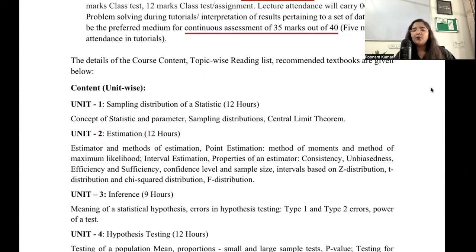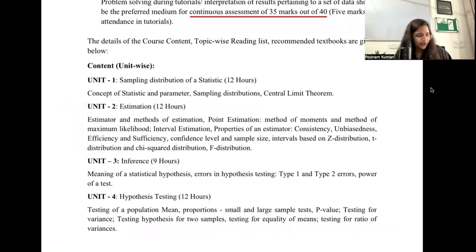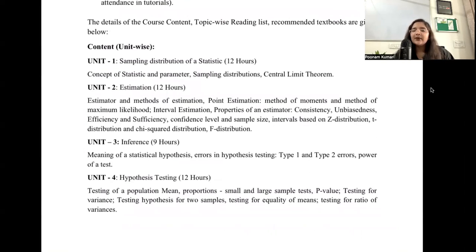Now let's talk about each topic. Unit 1 covers sampling distribution of a statistic — what is a statistic, what is a distribution, what is the Central Limit Theorem. Then comes Unit 2: estimation — which is a very important concept in statistics. When you talk about a population like all of India, it's very hard to collect data for every single person, so you pick samples and try to estimate your parameter of interest.